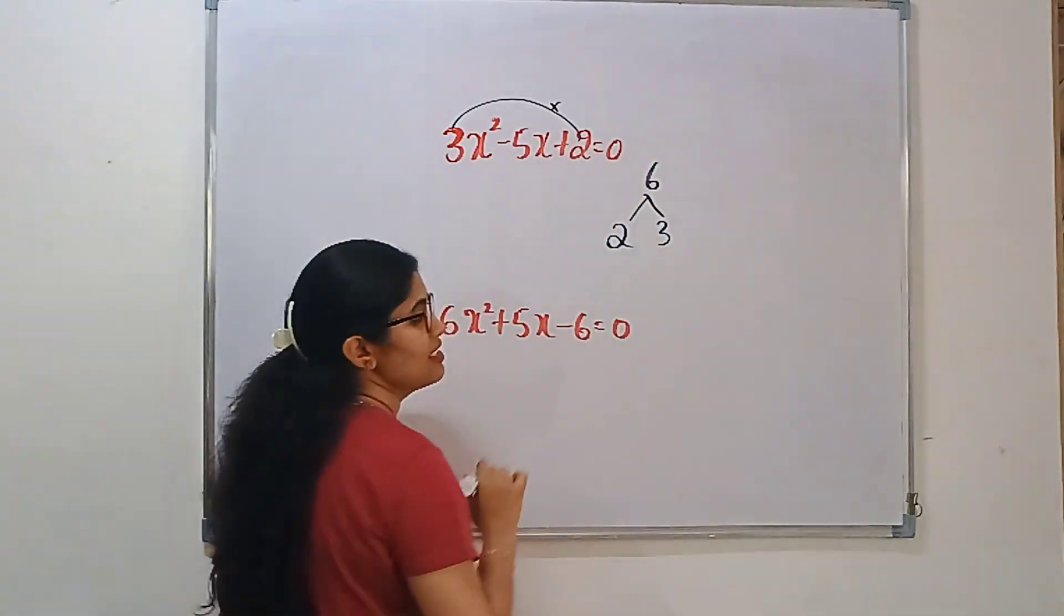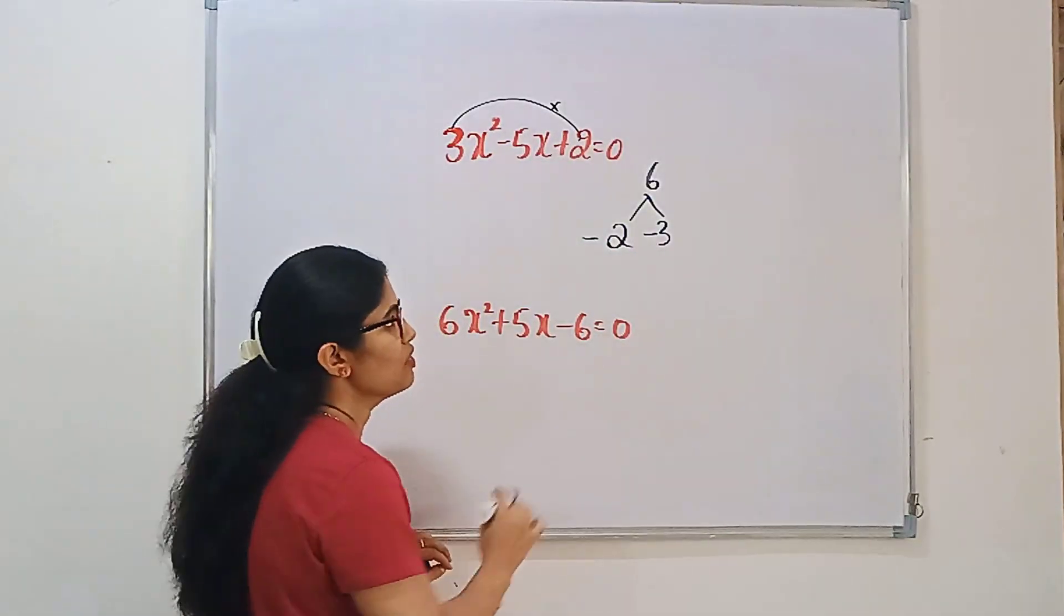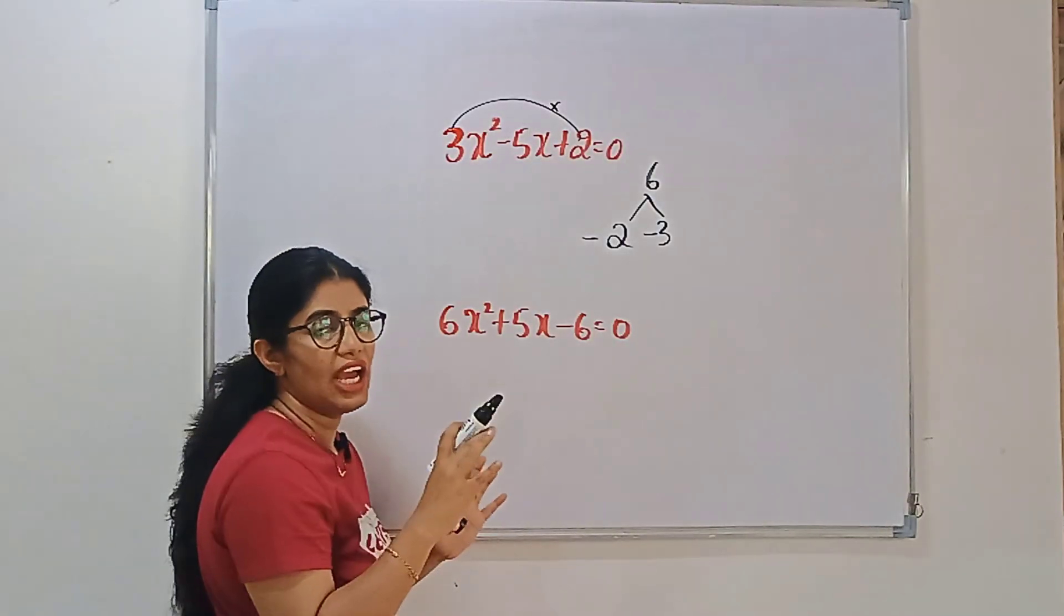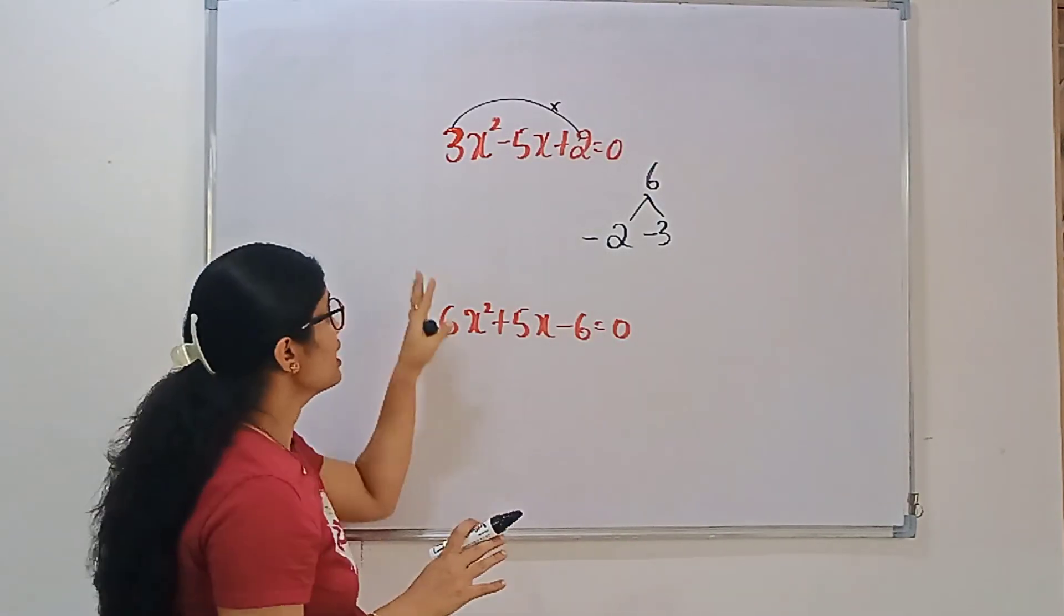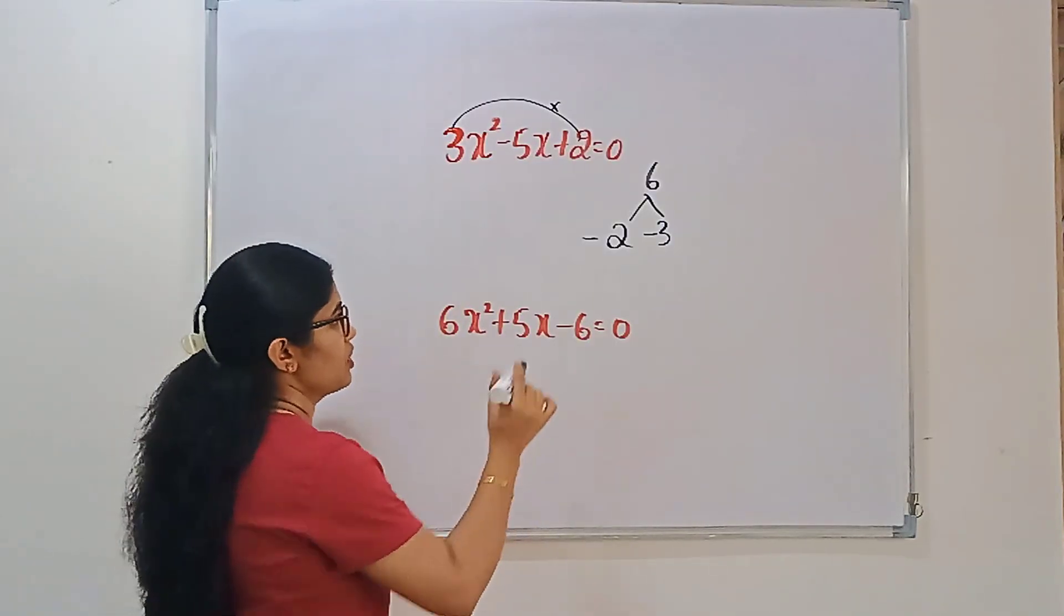So 2 and 3, can I consider? Then after that, we should get a negative. So here both are negative. Minus into minus is plus 6, we are getting. After that, in those problems, we have only the coefficient is 1. But here, coefficient is 3. So in that case, we need to divide by the coefficient.